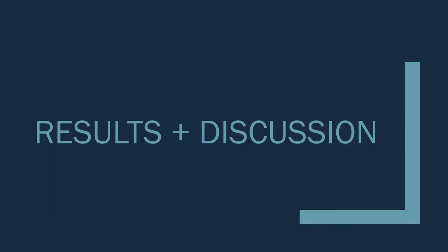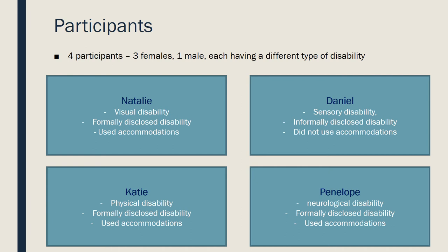In the end, four participants were recruited — three female and one male — each with a different type of disability. Participants used chosen pseudonyms: Katie, Natalie, Daniel, and Penelope. Katie, Natalie, and Daniel developed their disabilities in high school, while Penelope developed hers just before beginning medical school. Natalie, Katie, and Penelope formally disclosed their disability to the medical school through Learner Affairs and obtained accommodations, while Daniel informally disclosed his disability to preceptors in clinical settings when needed and did not use accommodations.